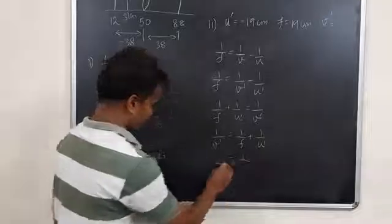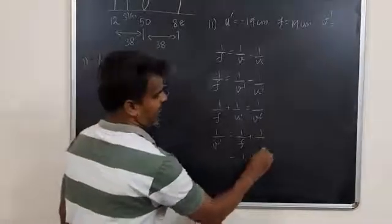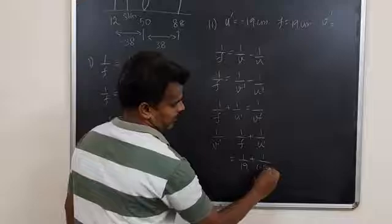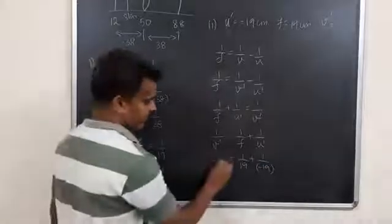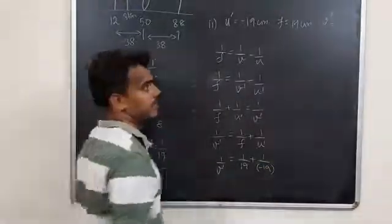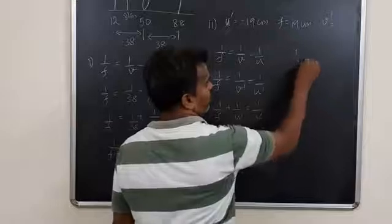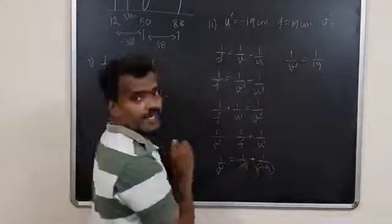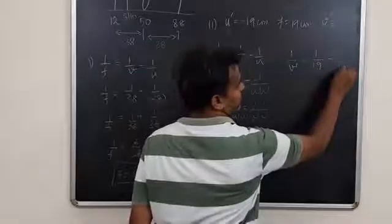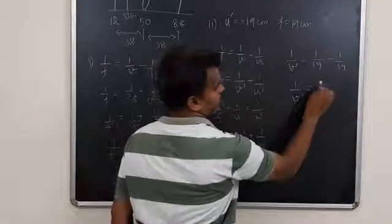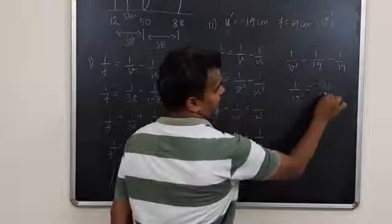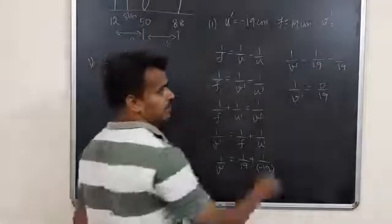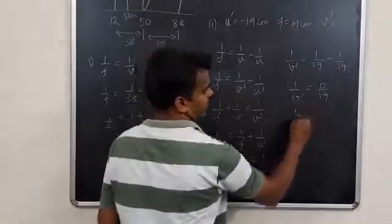What is F? 19. Plus what is U dash? Minus 19. 1 by V dash equals 1 by 19 plus minus 1 by 19. Therefore, 1 by V dash equals 0 by 19.